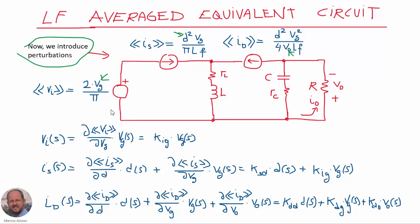For example, we can obtain the perturbation of the input voltage by taking the partial derivative of the input voltage over the only variable it depends on, which is the peak line voltage. We obtain this expression with the parameter chi_ig, which is this partial derivative. With this parameter we can obtain how the input voltage perturbation is going to change.